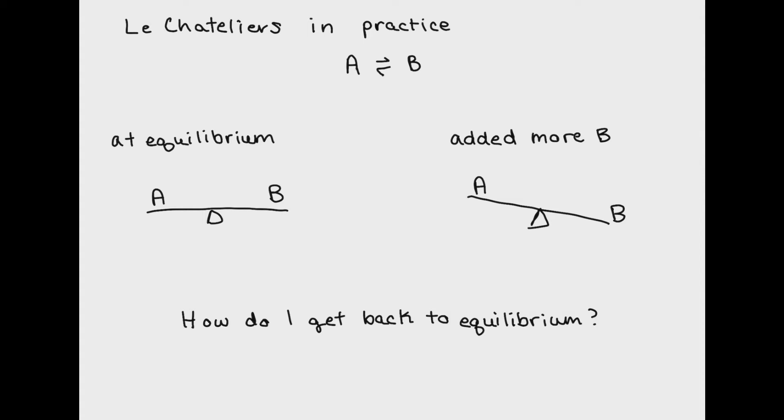So if I tilt my teeter-totter from equilibrium to being more heavily favored towards B because I added B, how would I get back to equilibrium? The ratio of A to B is no longer what it was at equilibrium because I added more B. So to get back to equilibrium, Le Chatelier's principle says that the reaction will make more A so that the ratio is restored to what it originally was.